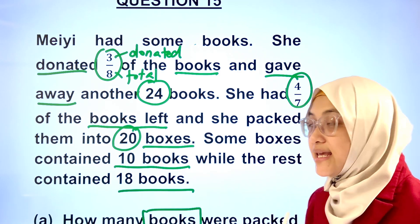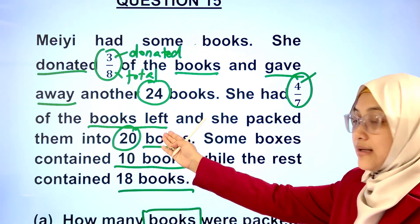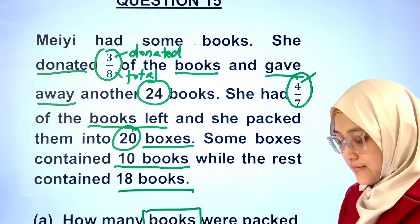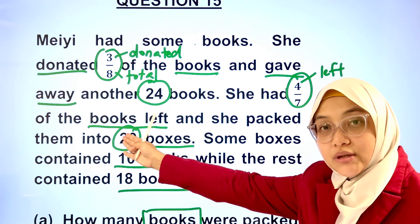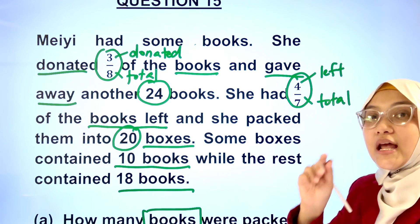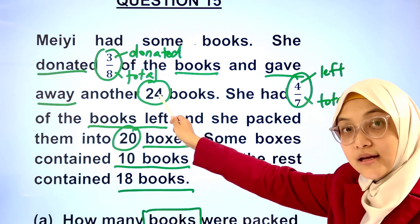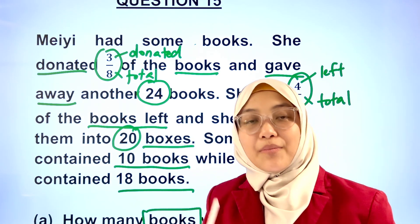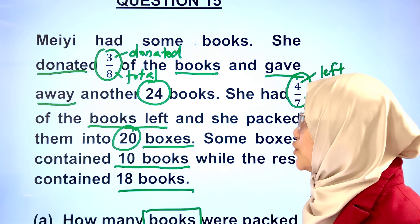The second fraction that we see here, 4 out of 7. 4 represents the unit of books left. 7 represents the total number of books. Notice that we have 2 totals here, which refer to the same number of books in total. However, the units are different.